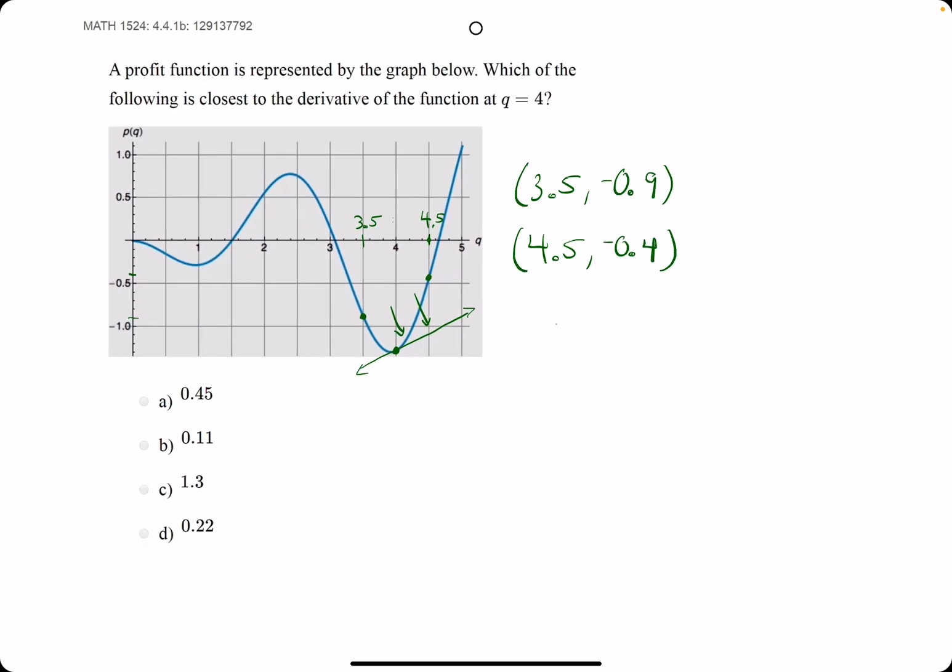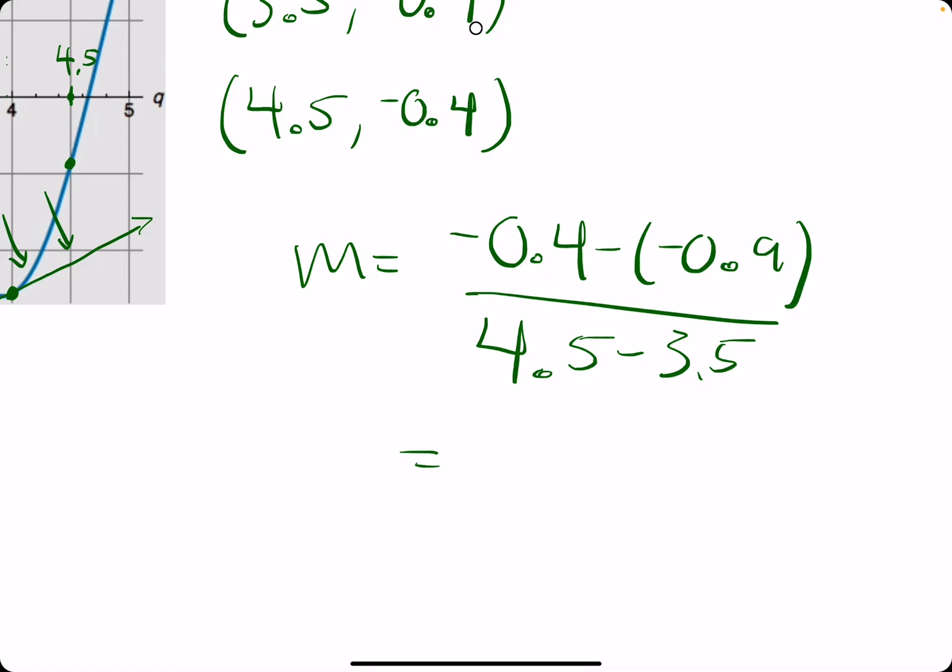All right, let's give it our best shot. We are finding the slope by doing Y2 minus Y1 over X2 minus X1. We get negative 0.4 minus negative 0.9, which is negative 0.4 plus 0.9. So we get 0.5 divided by 1, or just 0.5.